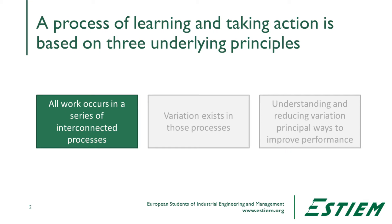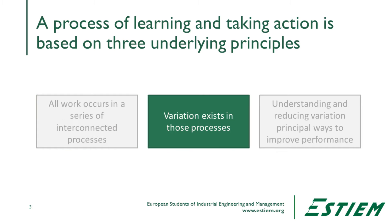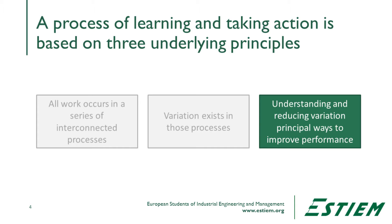Now we're going to turn to the subject of statistics, and in particular we're going to talk about a particular issue called the flaw of averages. Statistical thinking is a very simple process in some respects — it really has three principles. All work occurs in a series of interconnected processes. Variation exists in those processes and we can use that data to learn about how the processes perform. The third principle is that understanding and reducing variation are the principal ways to improve performance in both business and process. Profound knowledge is all about how the process operates, and we can improve profound knowledge if we can reduce variation.